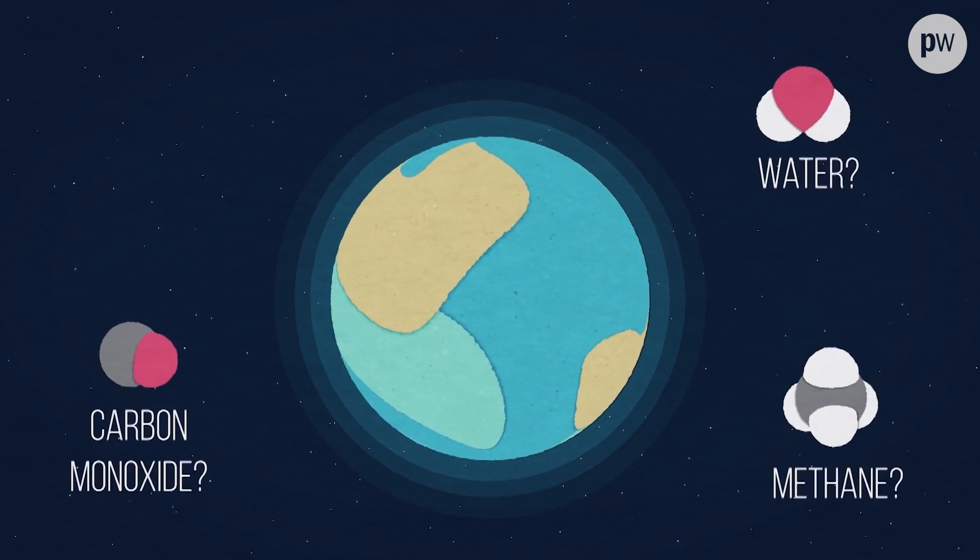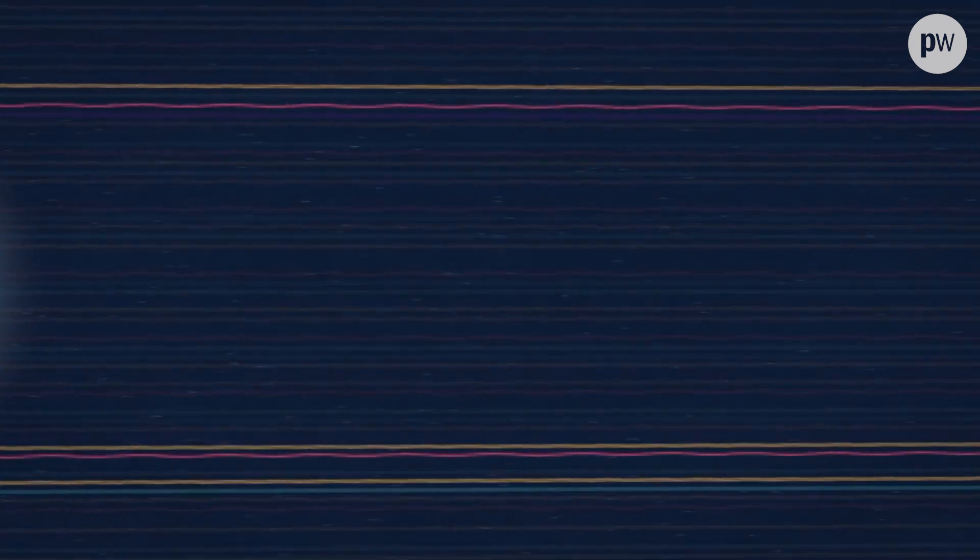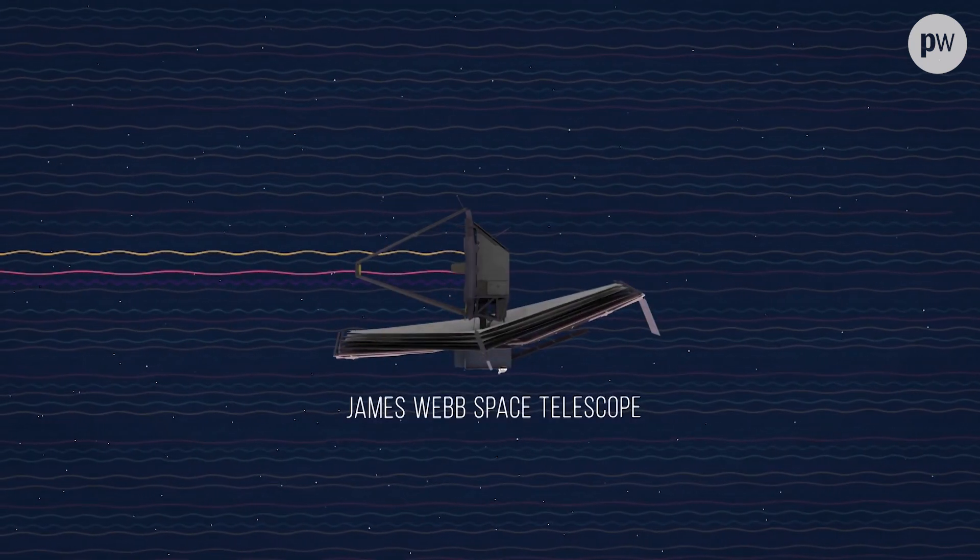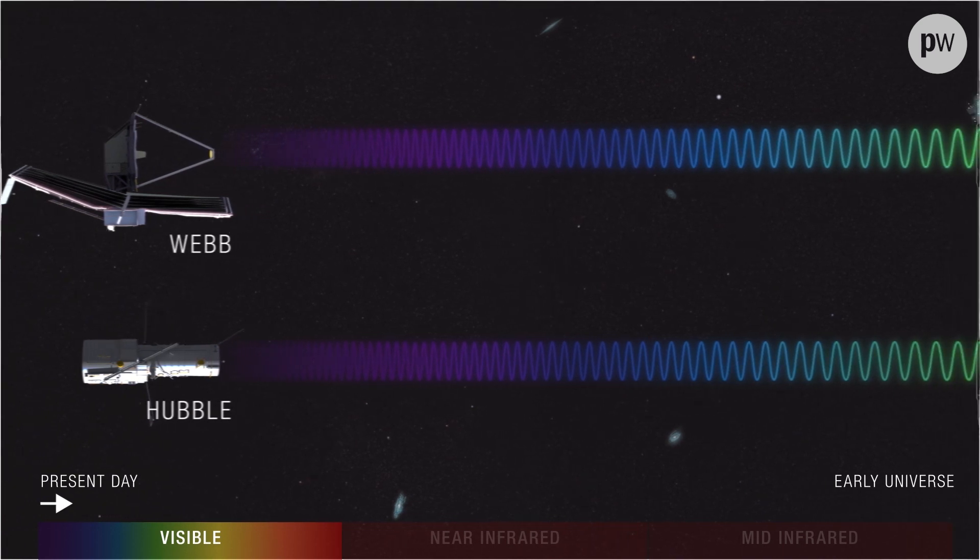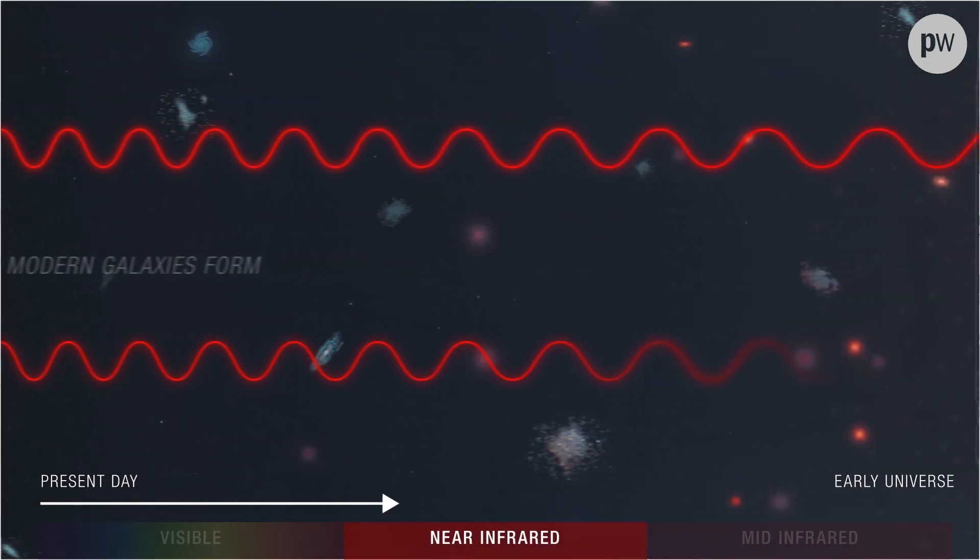JWST, as it is abbreviated, will probe the atmospheres of exoplanets to explore worlds beyond our solar system. It will also peer deep into the far reaches of space, looking beyond the limits of the Hubble telescope.